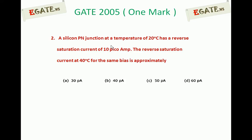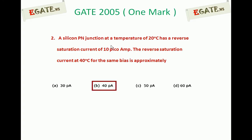Given that a silicon p-n junction at a temperature of 20 degrees centigrade has a reverse saturation current of 10 pico amperes, if the temperature increases to 40 degrees centigrade, what happens to the reverse saturation current? The correct answer for this one is (b) 40 pico amperes.